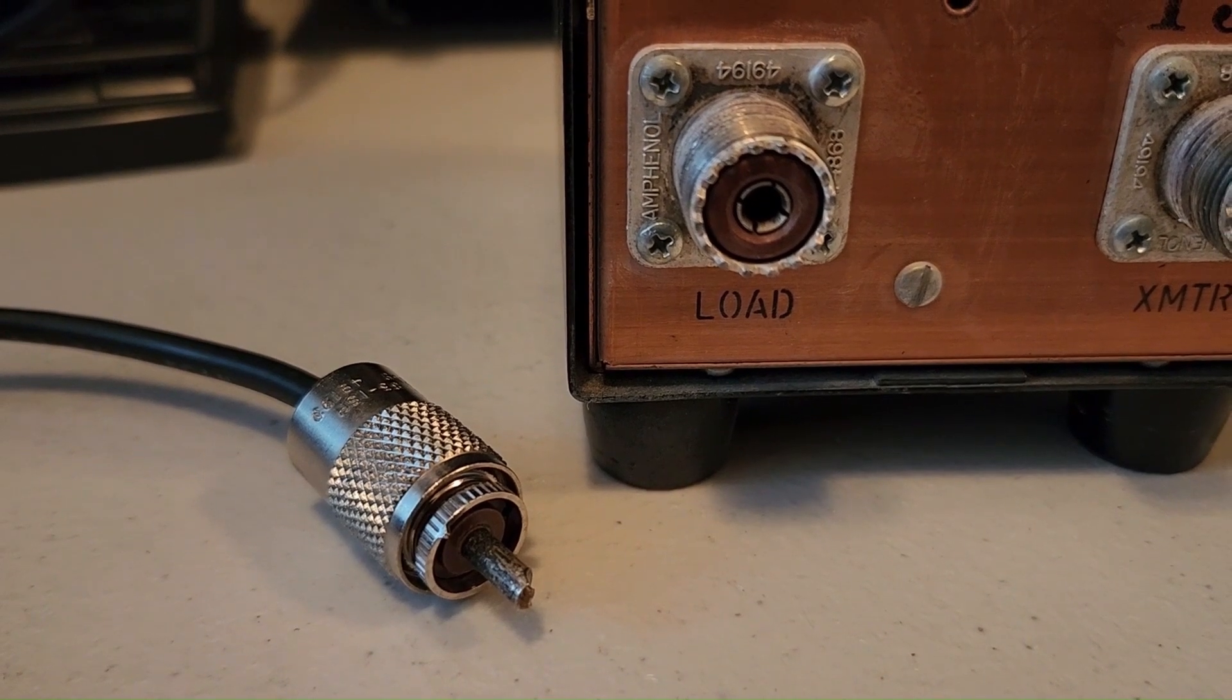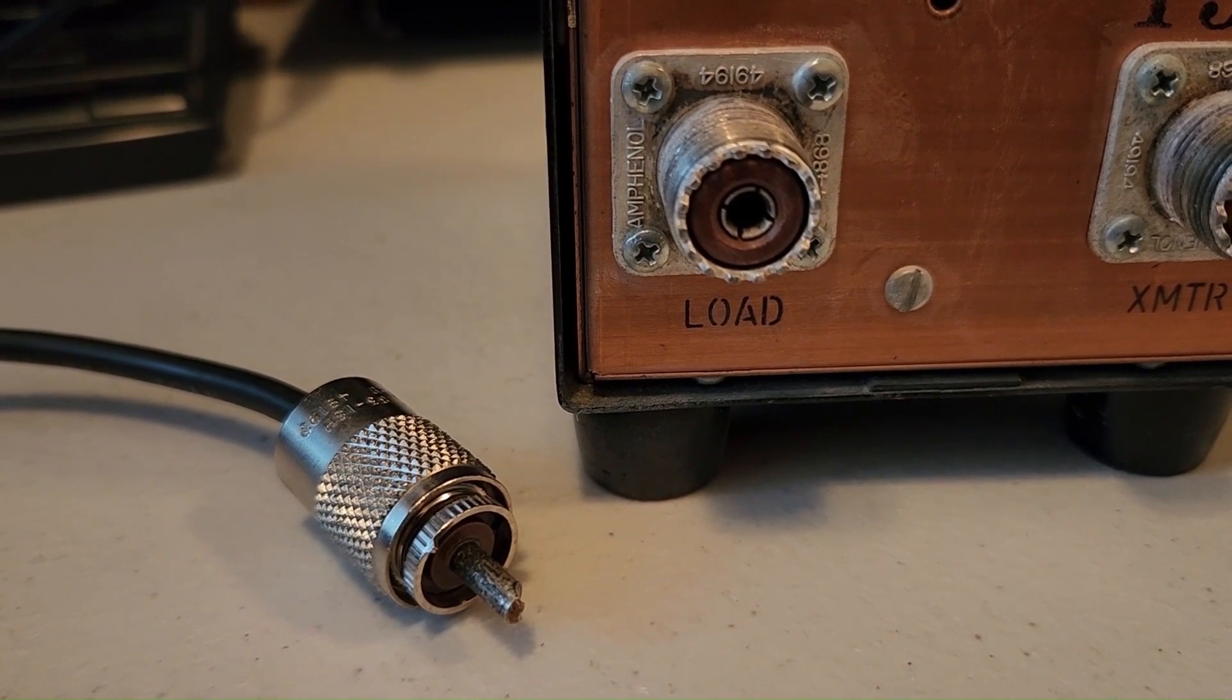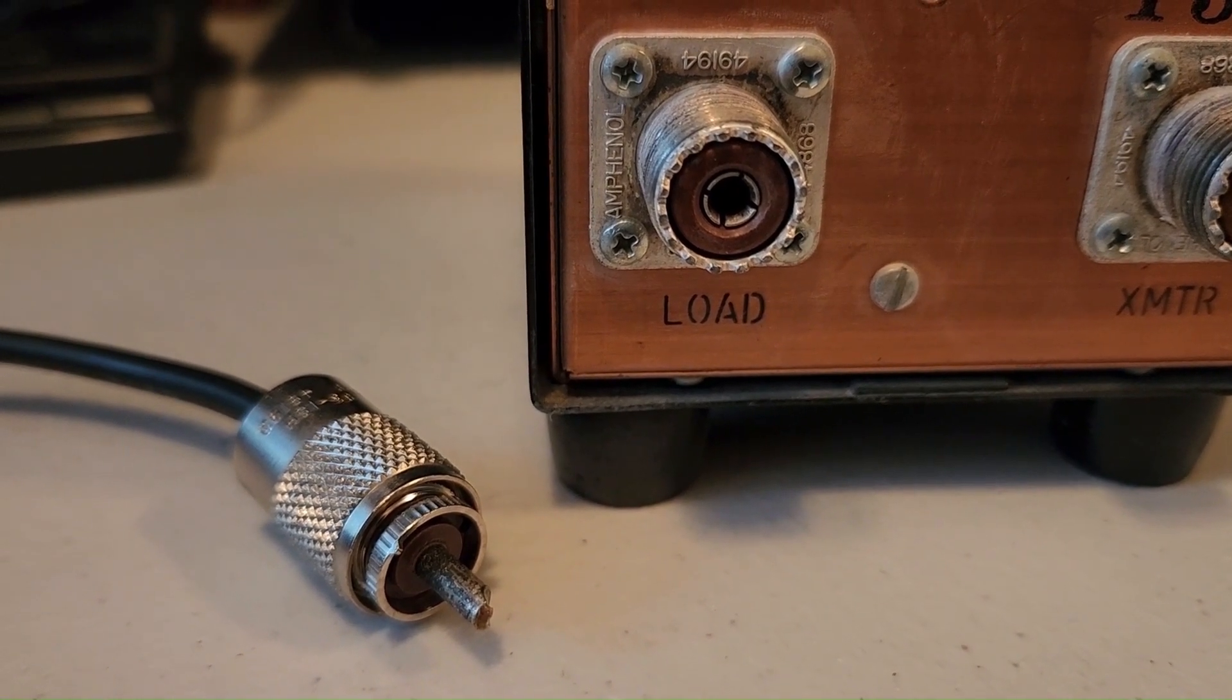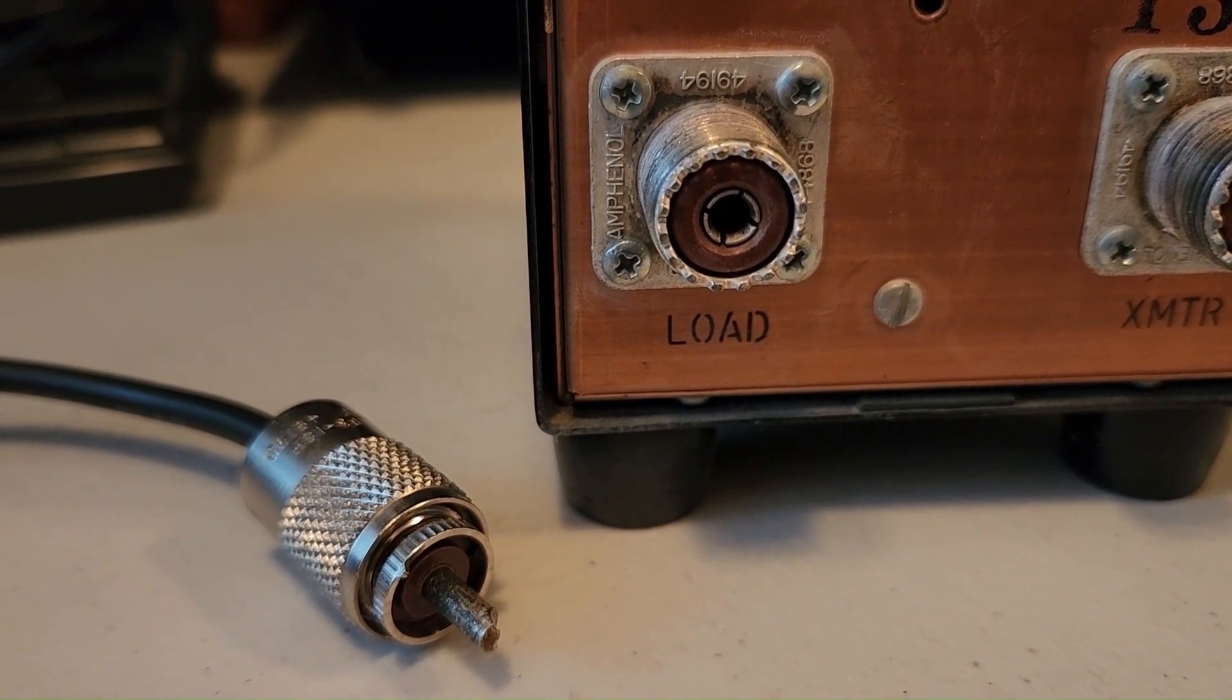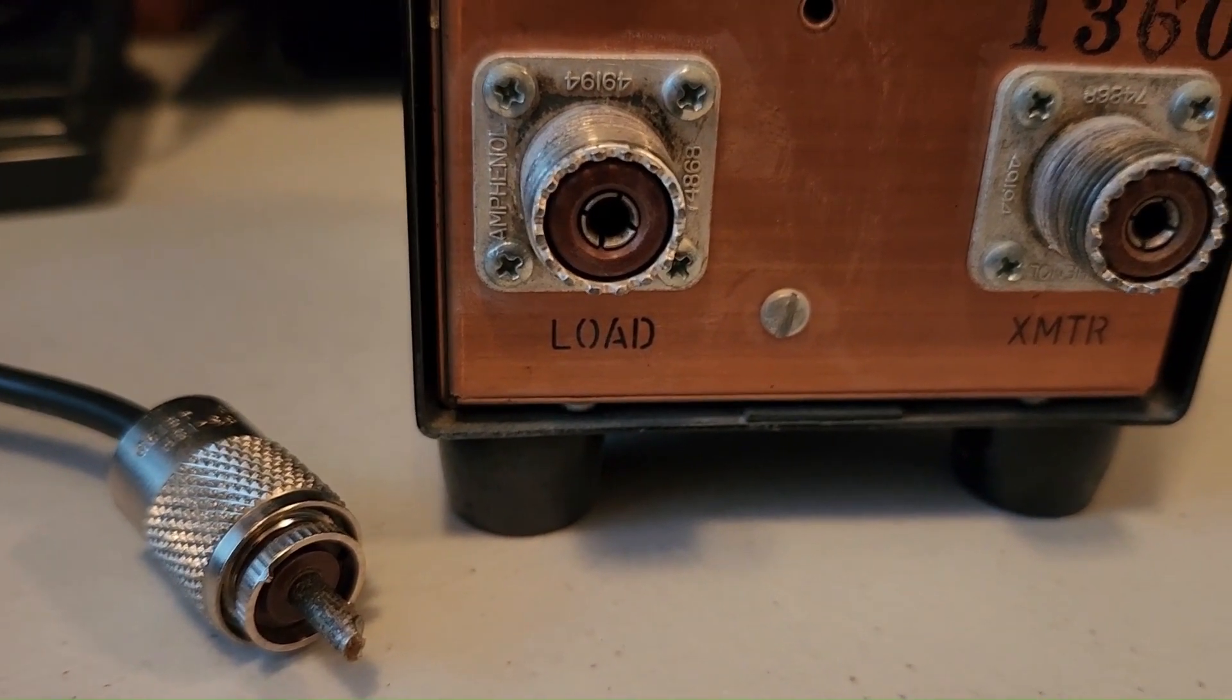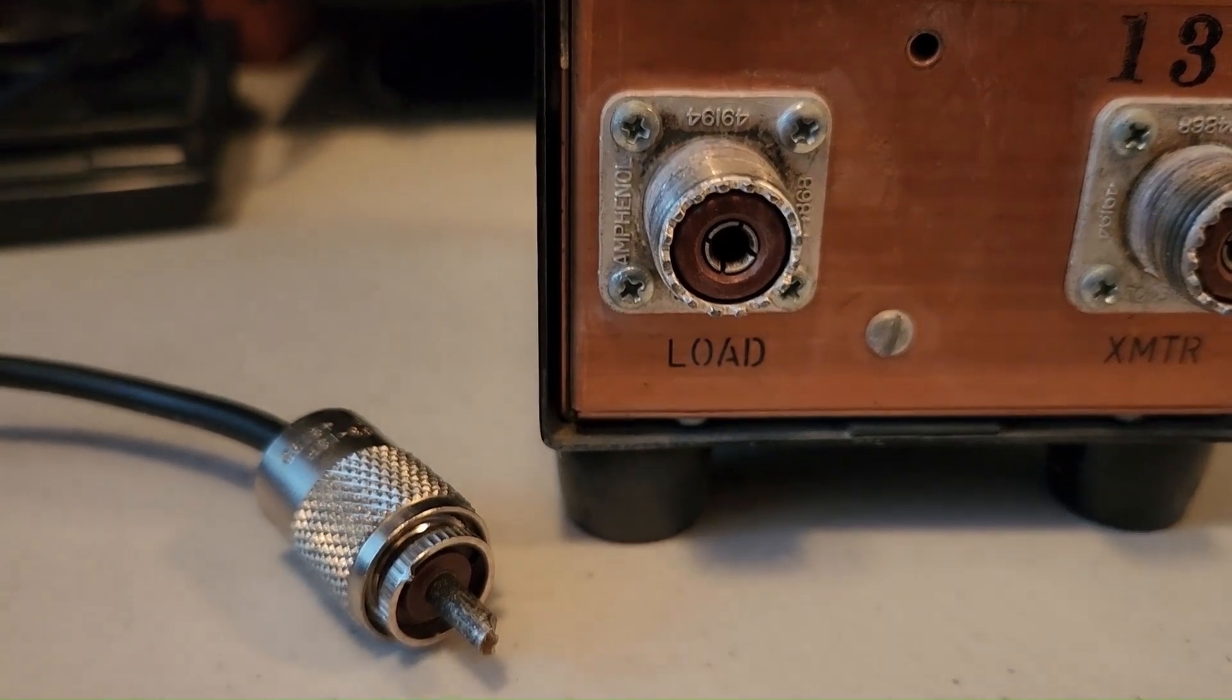The main drawback of the PL259 is the way it screws in. It can be easily unscrewed if it's mounted in a mobile installation and the vehicle is positioned where the connector is being pulled down by gravity. It doesn't take much vibration for the connector to unscrew and fall out. There are a few other disadvantages also. But that is the PL259 SO239.